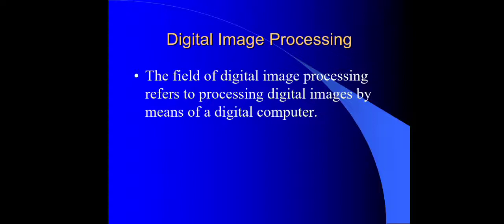In that system we have input, which is an image, and output also has an image. So we have input, then we have manipulation — which is processing — and in that process we also have an output image, that is a manipulated image. The most widely used application is Adobe Photoshop, which is an example of a digital image processing system.